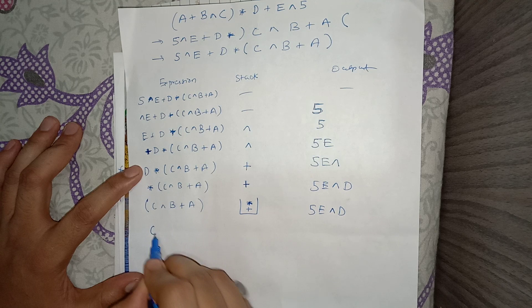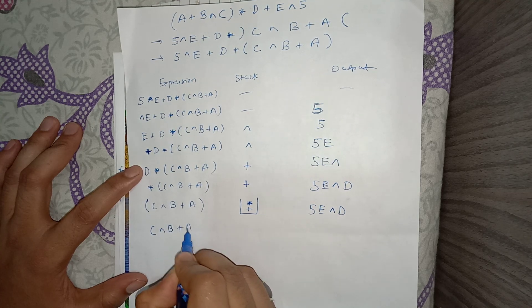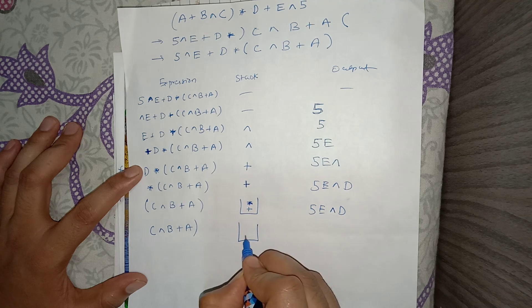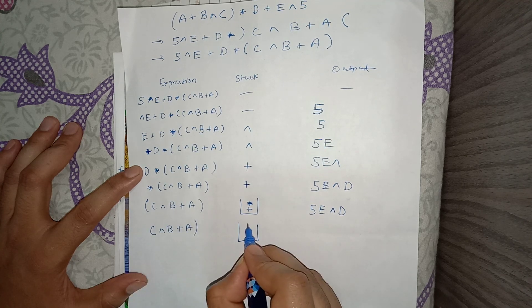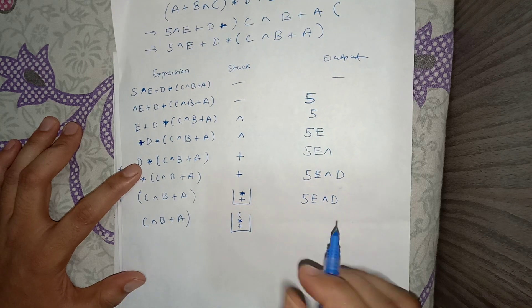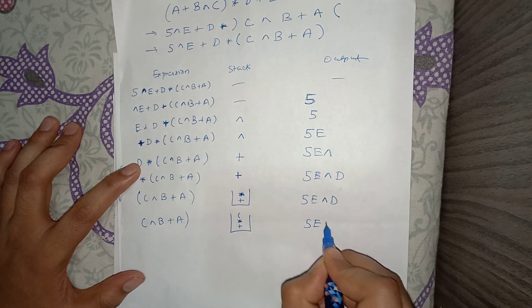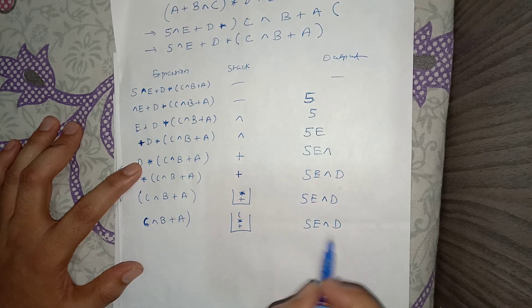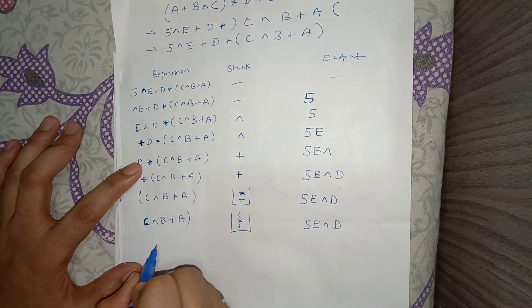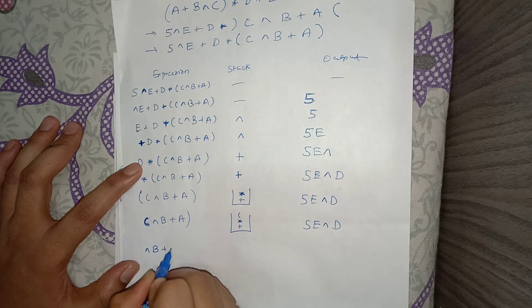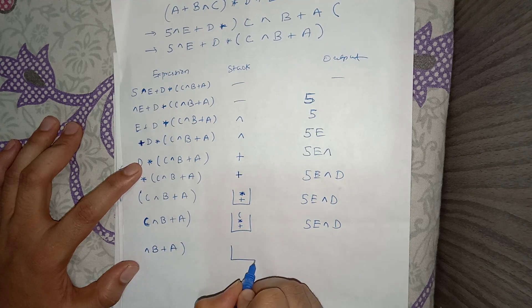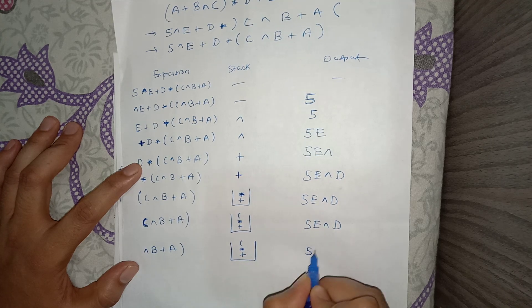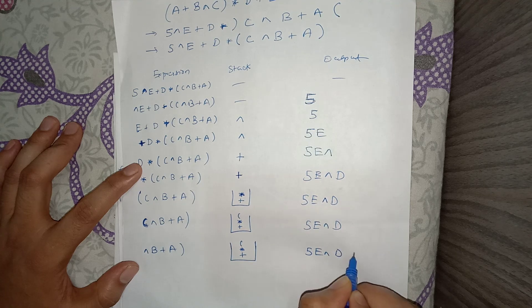After pushing the opening bracket, the remaining expression is C, XOR, B, plus, A, and the stack now has plus, multiplication, opening bracket. The next token is C, which is an operand, so it goes directly to the output: 5, E, XOR, D, C.